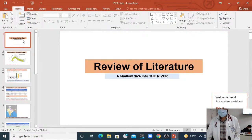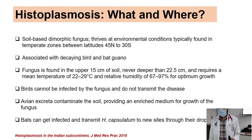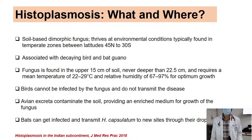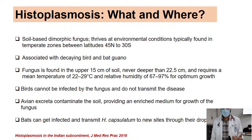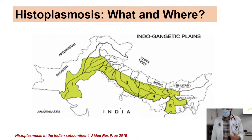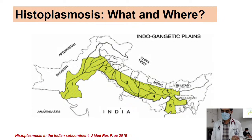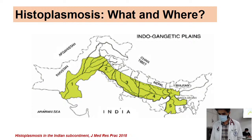Dr. Adil began the discussion by providing background on Histoplasma: it is a dimorphic fungus that thrives in moist, nitrogen-rich soil, particularly within the upper 15 centimeters. Earthquakes or construction activity lead to aerosolization of microconidia, exposing construction workers. In the Indian context, histoplasmosis is peculiarly found in the Indo-Gangetic plains — particularly West Bengal, UP, Delhi, and Punjab — with occasional case reports from across India, but these areas are particularly afflicted.